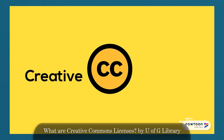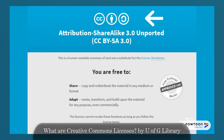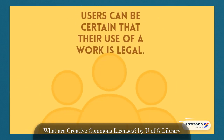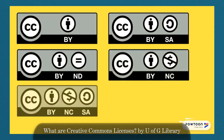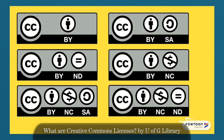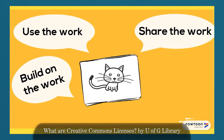This is where Creative Commons can help. Creative Commons exists to make permissions explicit and straightforward. CC licenses use icons and simple language so that creators can make their intentions clear and users can be certain that their use of a work is legal. These different licenses help people understand if and how they can use, share, or build on a work.